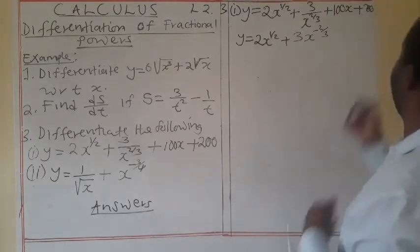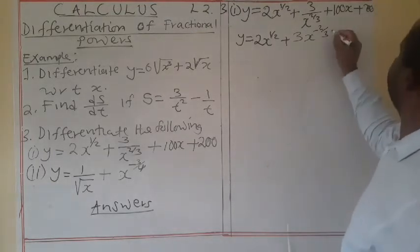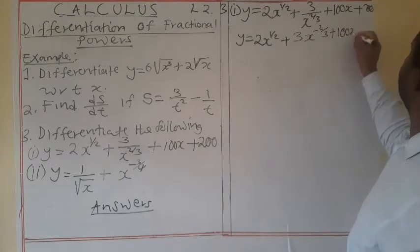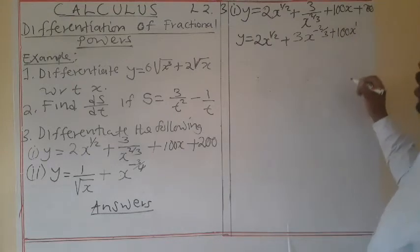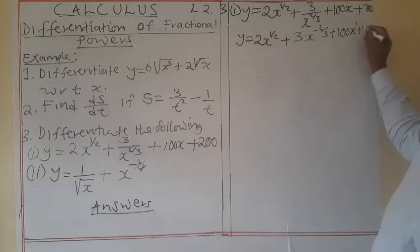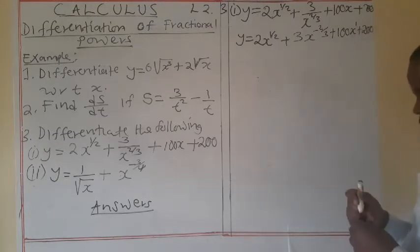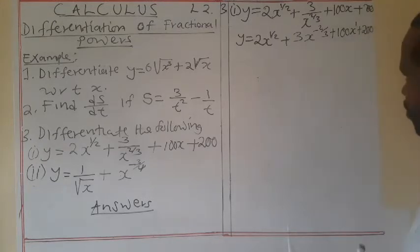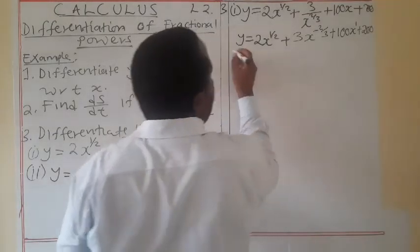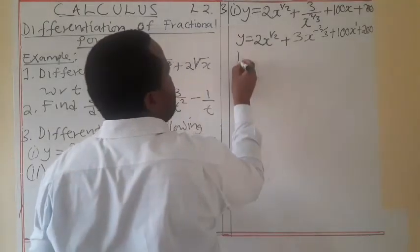Then plus 100x to the power of 1 — we'll just say 1 — plus 200. So now to find the derivative, it means we'll get dy/dx.